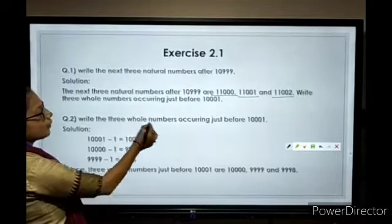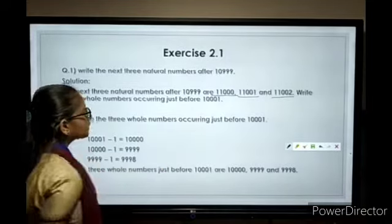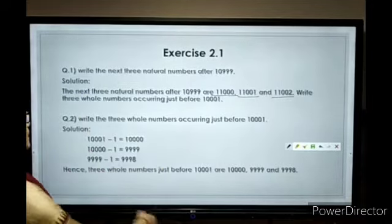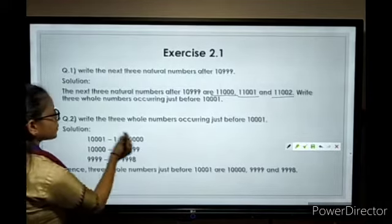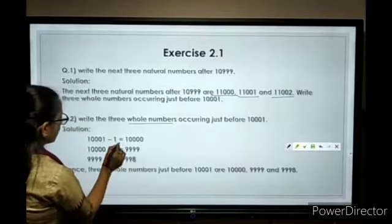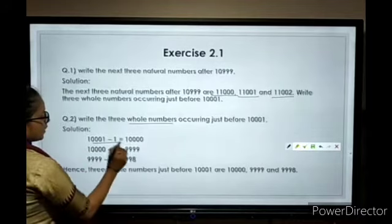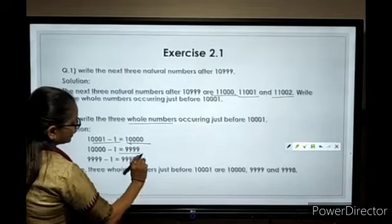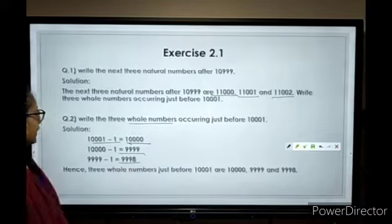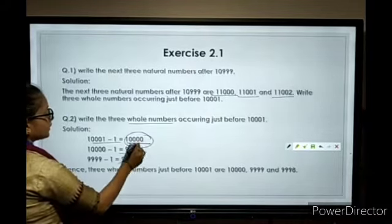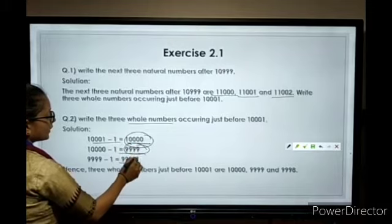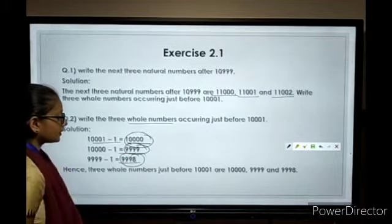Next: Write the 3 whole numbers just before 1001. Just before 1001, we subtract 1. The whole numbers are 1000, 999, and 998.